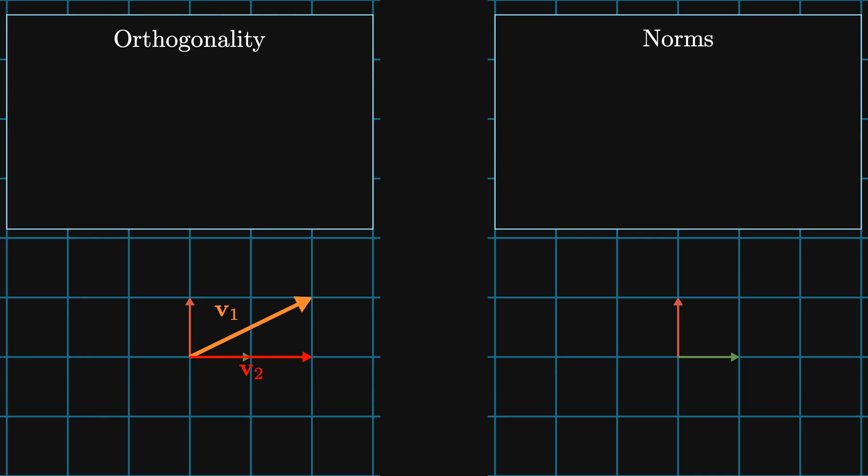Orthogonality is another consequence of the inner product. Two elements of an inner product space are called orthogonal if their inner product is zero. For example, using the dot product again, the inner product of v2 and v3 is zero, so they are orthogonal.